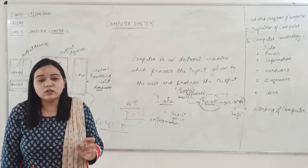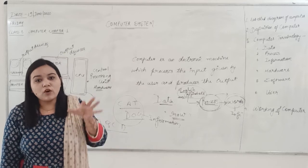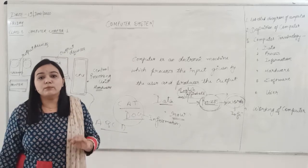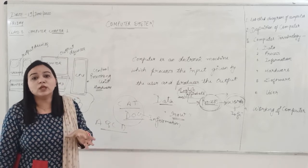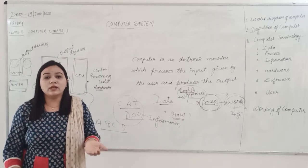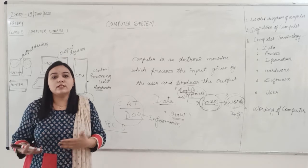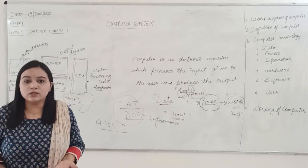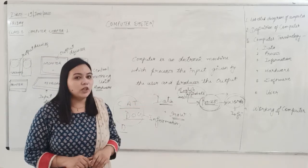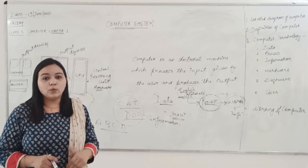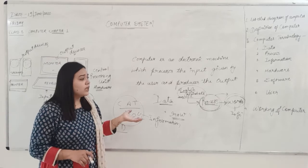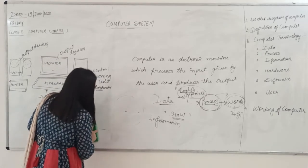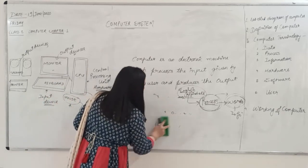Then comes the user. A user is someone who is performing tasks on a computer. The user is very important because the computer will not work on its own — it needs a user to give instructions to it. The user can be me, you, your friends, your parents — anybody using a computer is known as a user. Now, the working of a computer: there is a very simple block diagram that can explain how a computer works.